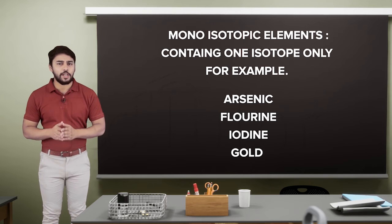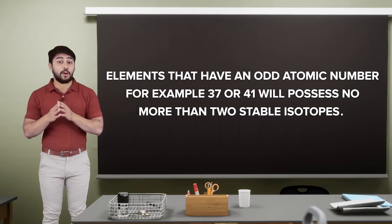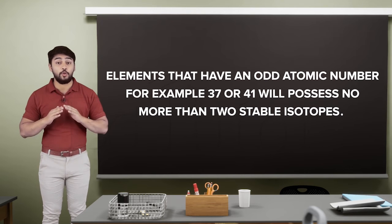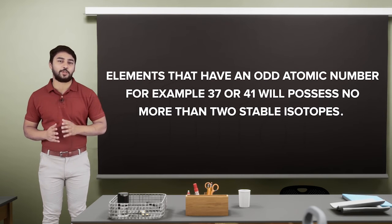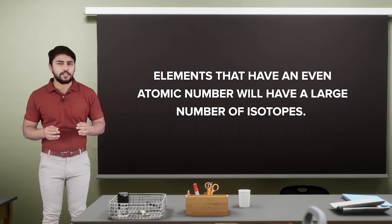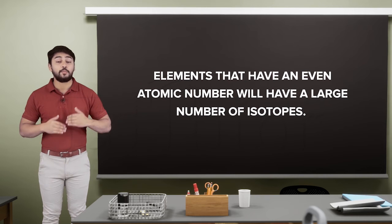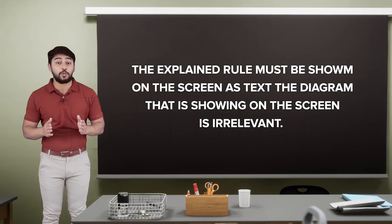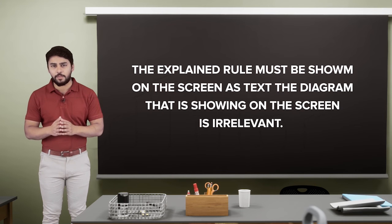In most cases, elements that have an odd atomic number like 37 or 41 possess no more than 2 stable isotopes, while elements having even atomic numbers possess a large number of isotopes. Finally, the isotopes with mass numbers in multiples of 4 are more abundant.